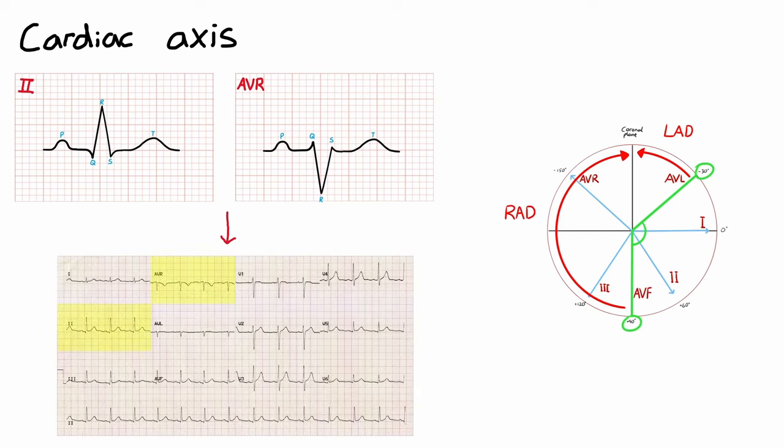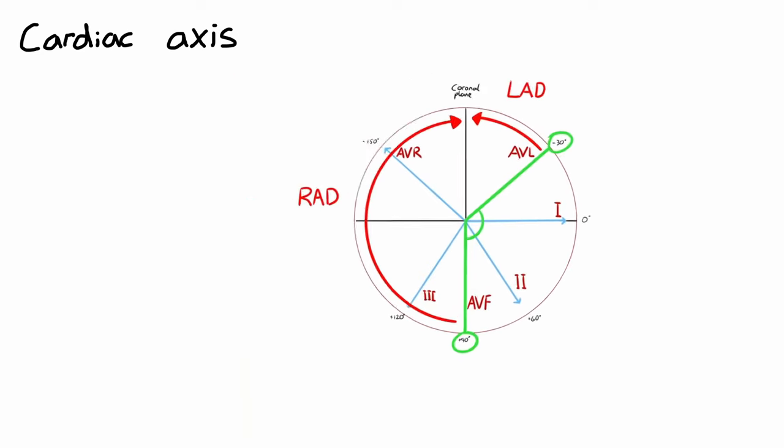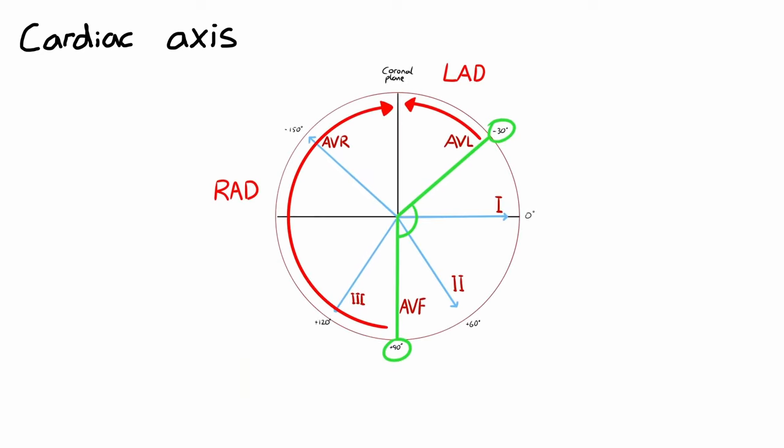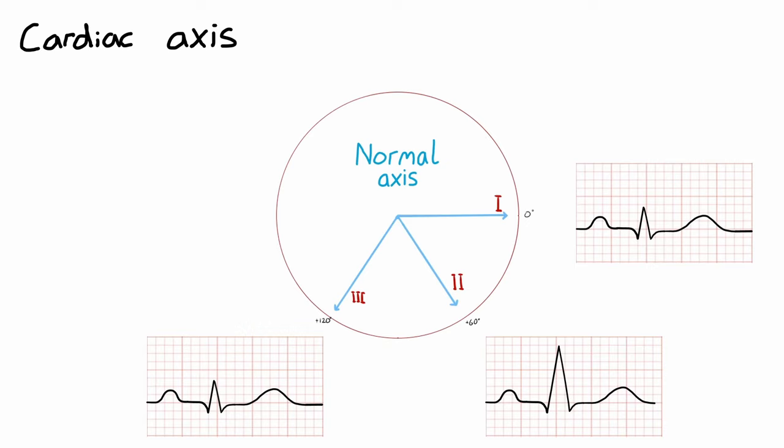Now in practice we commonly use leads 1, 2, and 3 to ascertain if we have a normal cardiac axis or a deviated one. This is because they almost replicate the normal cardiac axis values between minus 30 and positive 90, and they also lie next to each other on ECG, which makes for easy comparison. So for a normal cardiac axis, lead 2 should be more positive than leads 1 or 3.